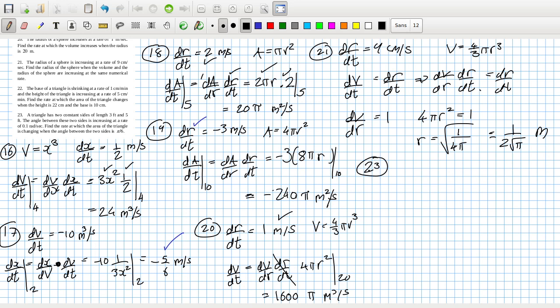And then 23. A triangle has two constant sides of length 3 and 5 feet. The angle between these two sides increasing at a rate of 0.1 radians per second. Find the rate at which the area of the triangle is increasing. Okay, so we have a triangle. And the triangle has two constant sides of 3 and 5. And there's an angle here, theta.